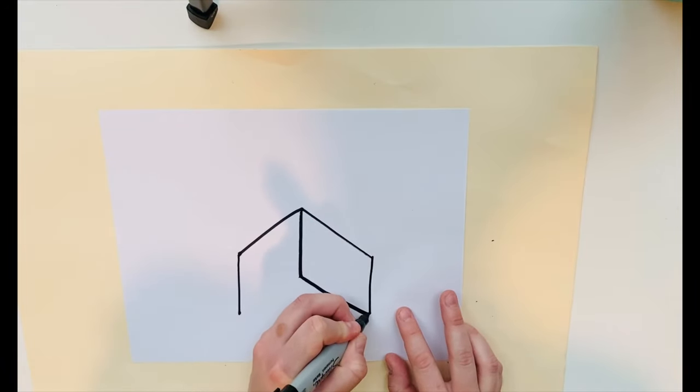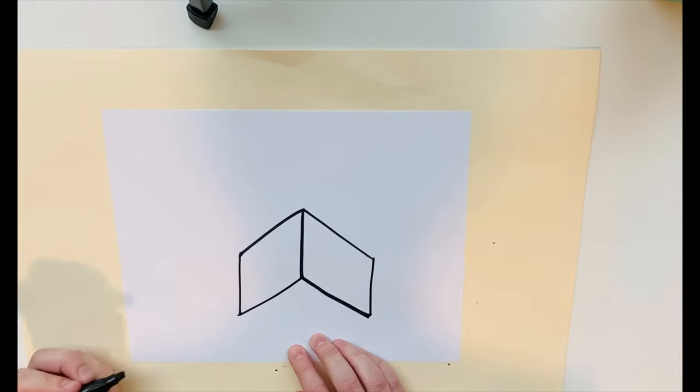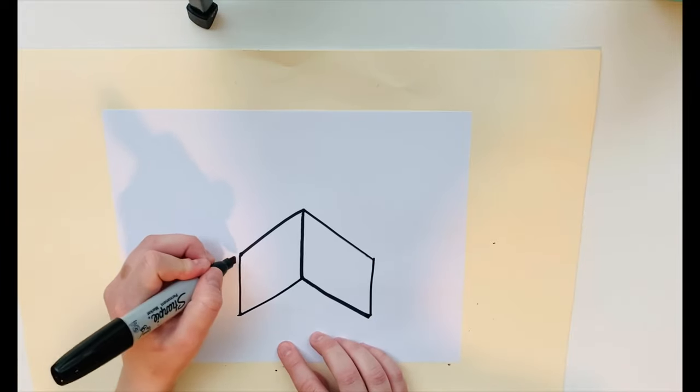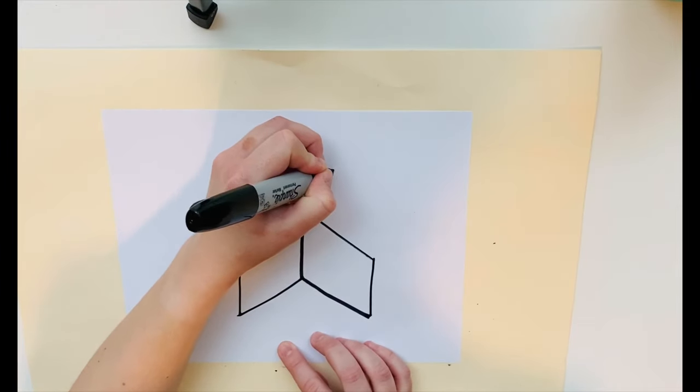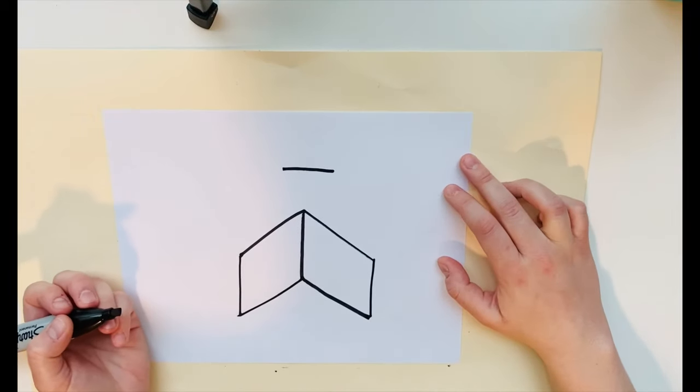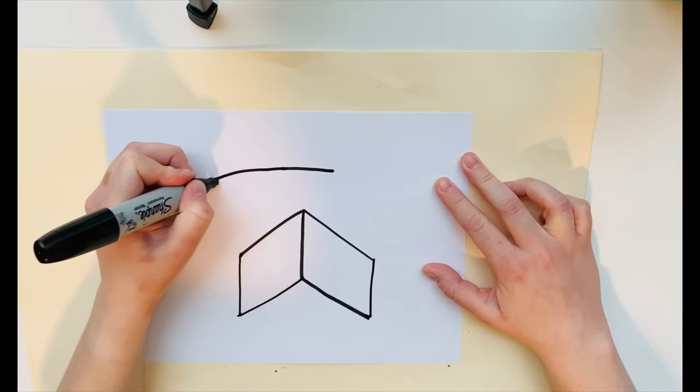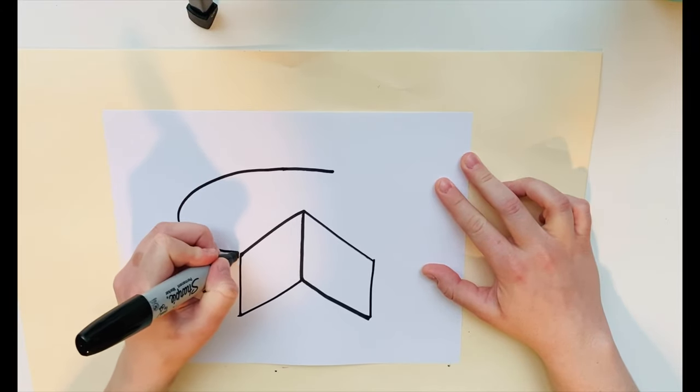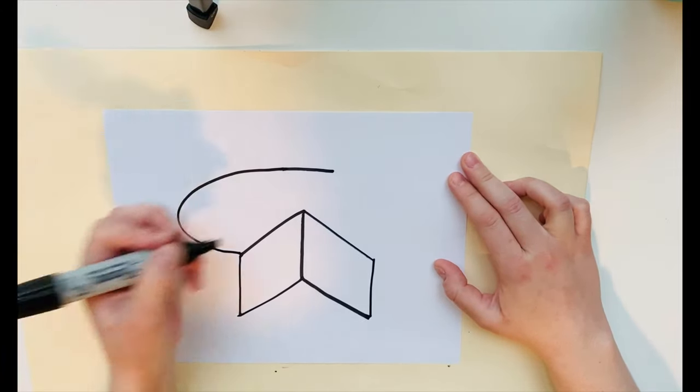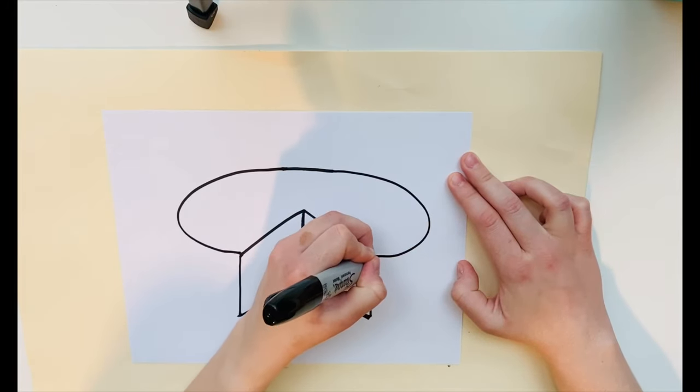Next, we're going to connect the middle line to the lines on the sides. Here I'm going to draw the curved line that's on the side of the cake to show the top part of the cake.